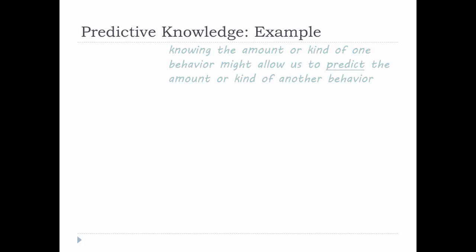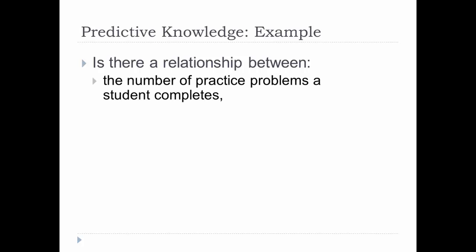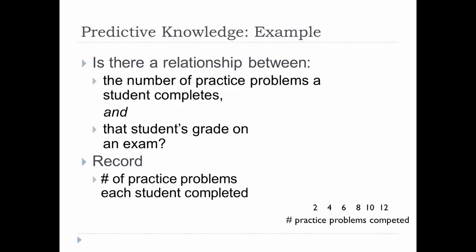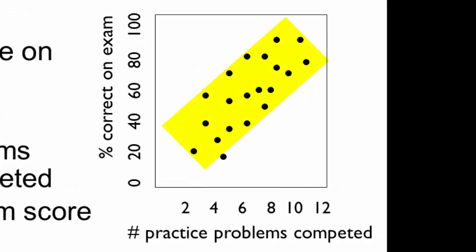Let's turn next to predictive knowledge, where knowing the amount or kind of one behavior might allow us to predict the amount or kind of another behavior. In this case, this example, we want to know if there is a correlation or a relationship between how many practice problems a student completes and that student's grade on an exam. This would be very nice to know, but first we need to establish that there is indeed a pattern, or a relationship between the two variables. So, we record the number of practice problems and that student's exam score, and we find this. Well, this looks like we can predict how well a student did on the test based upon how many practice problems the student completed before the test. Now, while the prediction isn't perfect, it might give us some useful information.